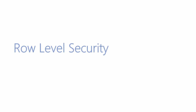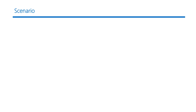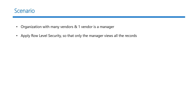In this video we will see another application of row level security. The scenario is: I have an organization with many vendors, and one of those vendors is the manager for every other vendor. We need to apply row level security so that only the manager views all records — his own and all other vendors' — while individual vendors see only their own transaction records. Let's see how to implement this in Power BI.